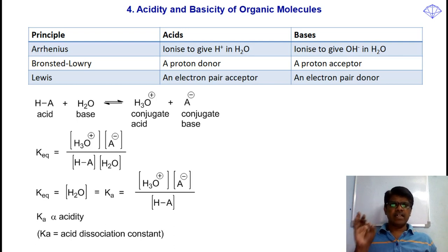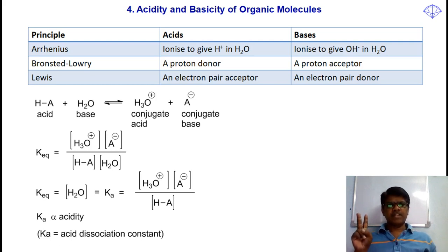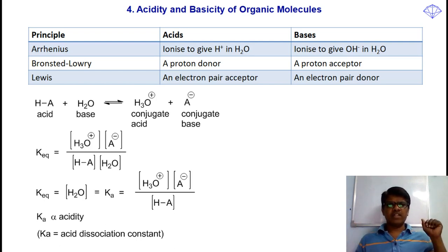Dear friends, till now we have learnt about two theories. The first is Arrhenius theory, which explains that if a compound gives rise to H-plus ions in water, it is known as an acid, and if a compound gives rise to OH-minus in water, it is known as a base. According to Bronsted-Lowry theory, a proton donor is an acid and a proton acceptor is a base.